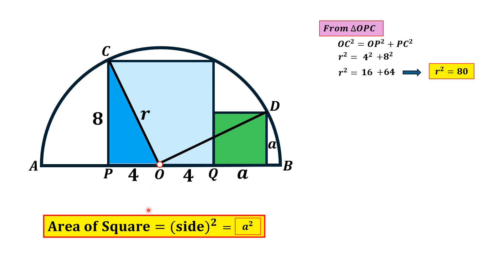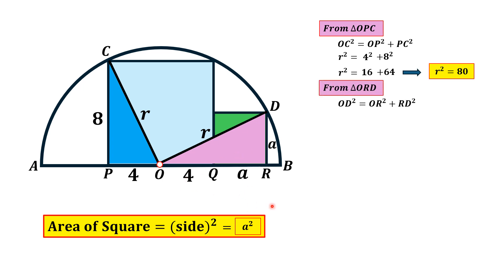Now we draw another line from point O to point D, a corner of the smaller square. OD is again the radius of the semicircle. Triangle ORD is a right triangle where OD is the hypotenuse. RD equals A and OR equals 4 plus A.